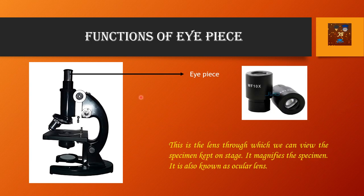Functions of the eyepiece: this is the eyepiece. If we zoom it or take it out from the compound microscope, it looks like this. The 10x marking means this is the magnification power of this eyepiece. This is the lens through which we can view the specimen kept on the stage. It magnifies the specimen — naturally it has a magnification power of 10x. It is also known as the ocular lens.